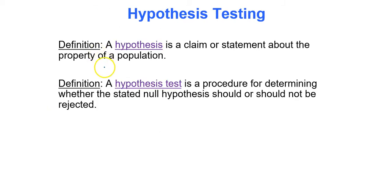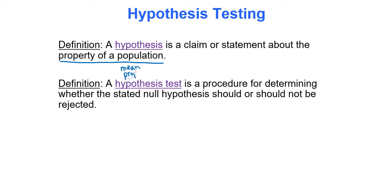So first, what is a hypothesis? A hypothesis is a claim or statement about the property of a population. For instance, we could be looking at a population mean or a population proportion, and we're going to make a statement about whether that mean or proportion is greater than, less than, equal to, or not equal to some value.